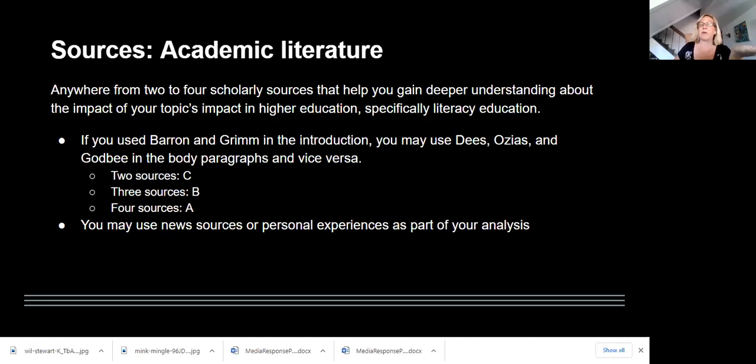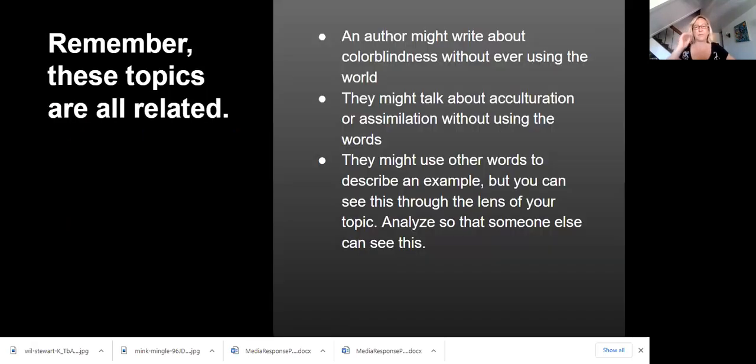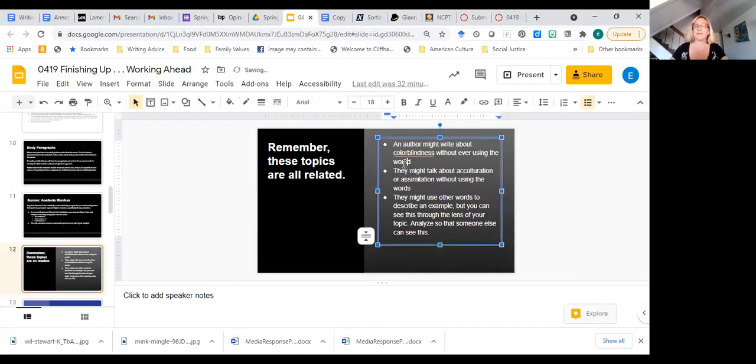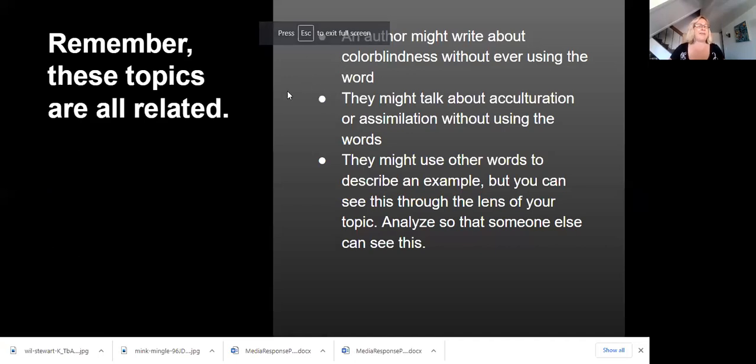You can, if you use Barron and Grimm in the introduction, you can use Dees, Osias, and Godby in the body paragraphs and vice versa. So if you use Dees, Osias, and Godby in the introduction to introduce your topic, you could use Barron and Grimm in the body. Does that make sense? And you can use news sources or personal experience as part of your annotated glossary. I mean, like, seriously, these are real world issues. These are, oh, that bothers me enormously. I spelled, I used, sorry, this is me just being editing as I go.